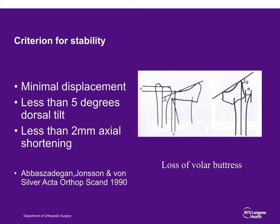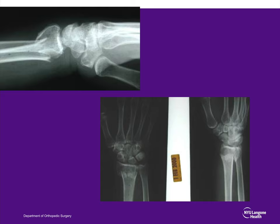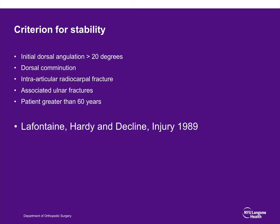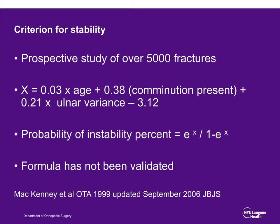Can we look at an x-ray and predict who will fail? Stable fractures have less than 5 degrees of dorsal tilt and less than 2 millimeters of axial shortening. LaFontaine and colleagues described criteria for instability: dorsal angulation greater than 20 degrees, dorsal comminution, intra-articular fracture, associated ulnar fractures, and patients older than 60. A regression model was attempted but follow-up studies showed it was not very predictive. Cooney and colleagues noted that greater than 20 degrees of dorsal angulation or greater than 10 millimeters of axial shortening on pre-operative radiographs are indicators, though initial radiographs are relatively unpredictable overall.